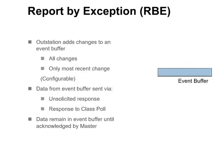DNP-3 supports report by exception, or RBE. With RBE, the outstation only reports data changes. RBE can be used with polling or with unsolicited responses. With RBE, the outstation adds changes to an event buffer. It may add all changes or only the most recent change, and which type is added can be configured per data type. Data from the event buffer can be sent via unsolicited responses or in response to a class poll. The data remain in the event buffer until acknowledged by the master.